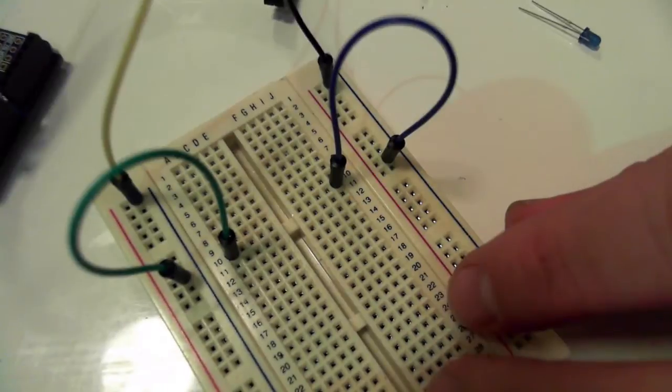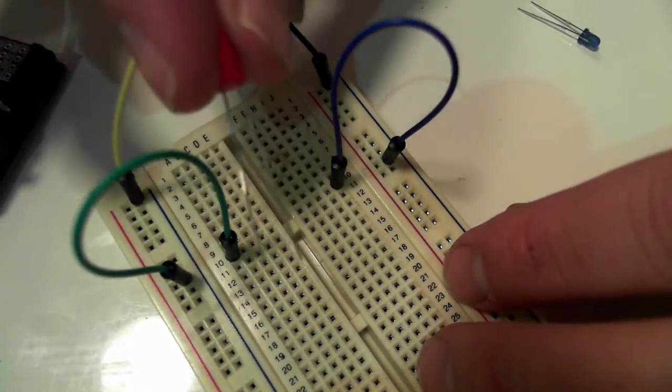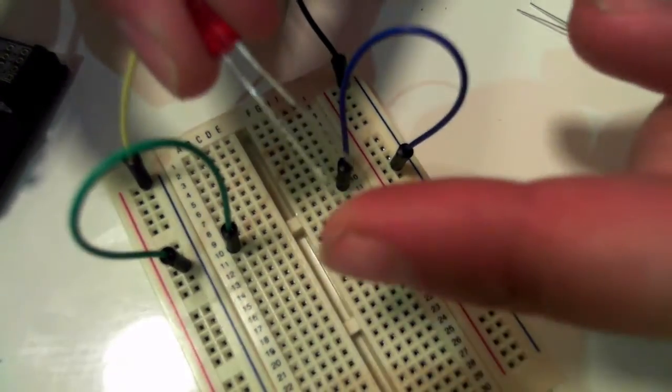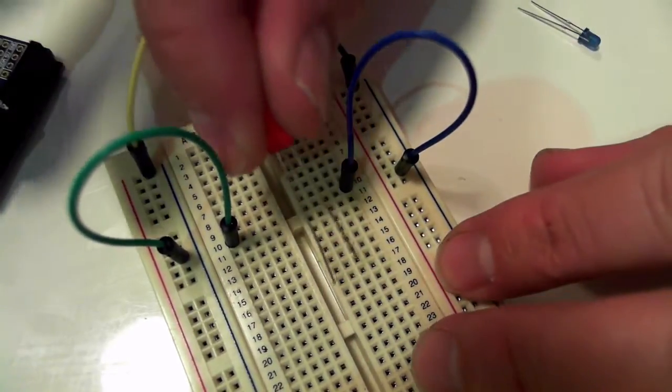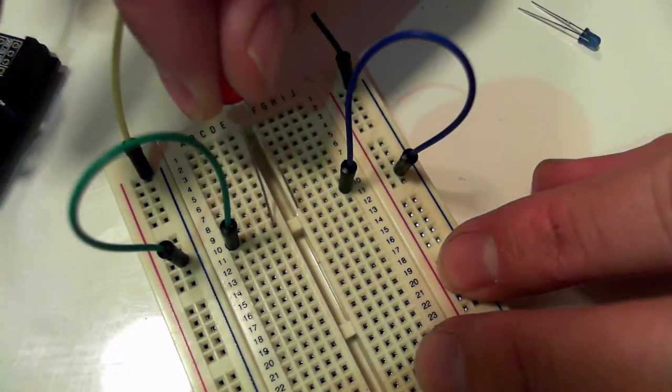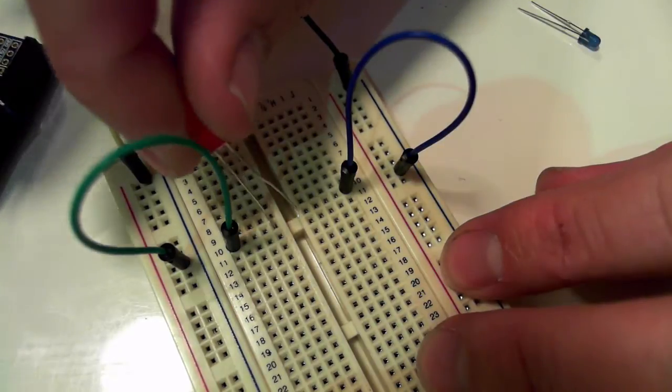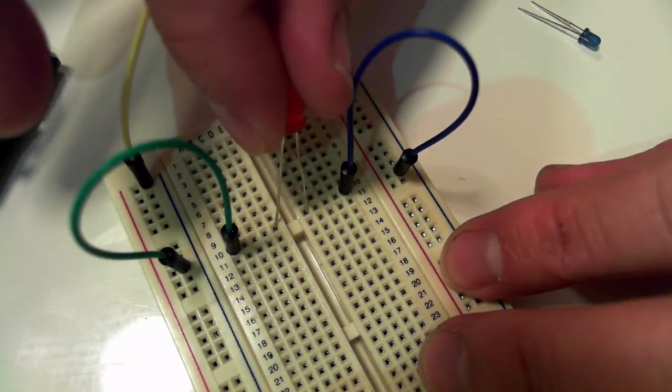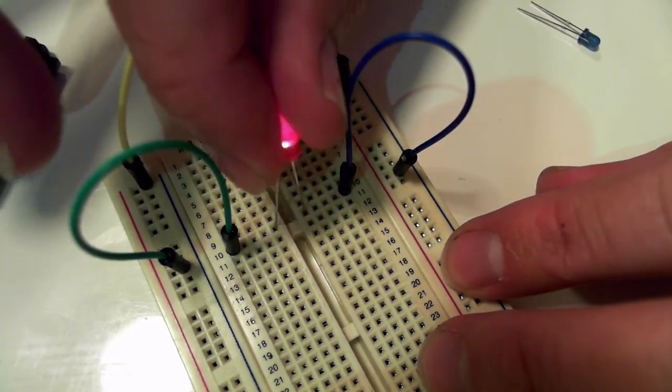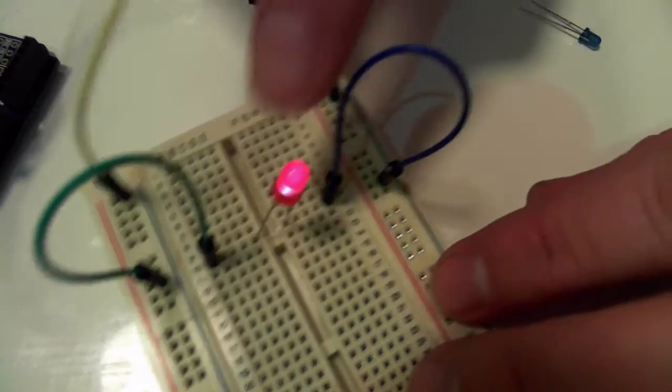Now if we take my light, or my LED, remember that the long one is my positive. So if I plug the long one anywhere in here, put it there, and my negative anywhere here, push it in, and we have the light on.